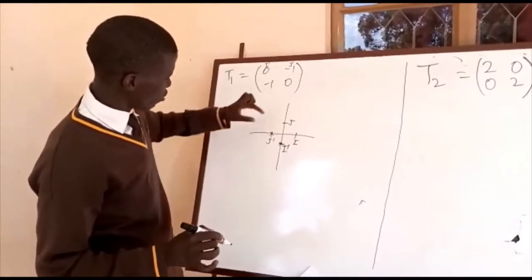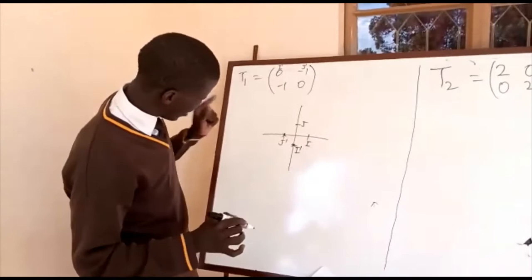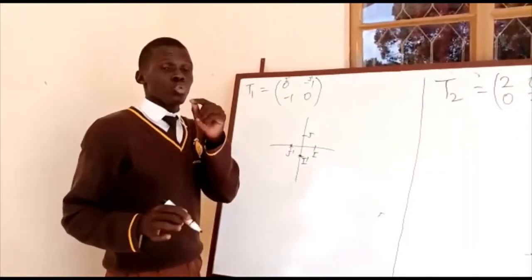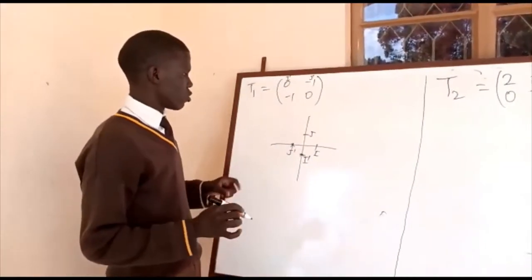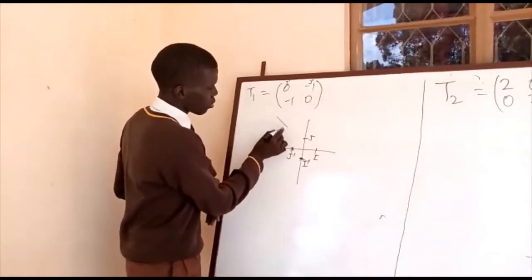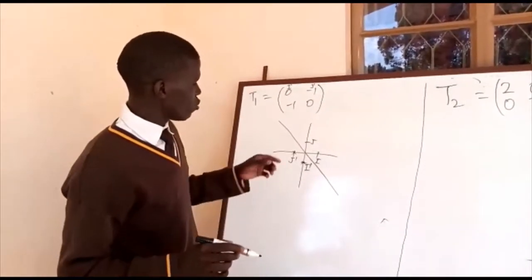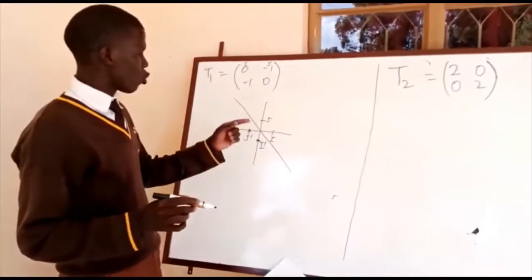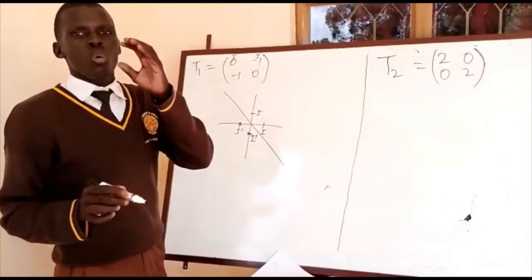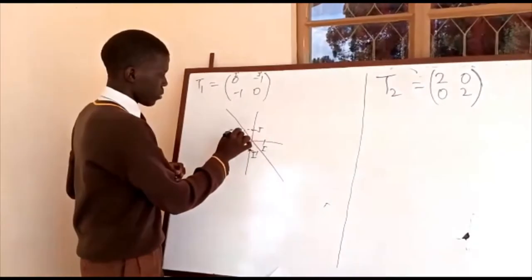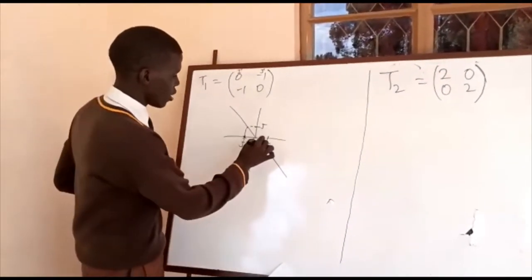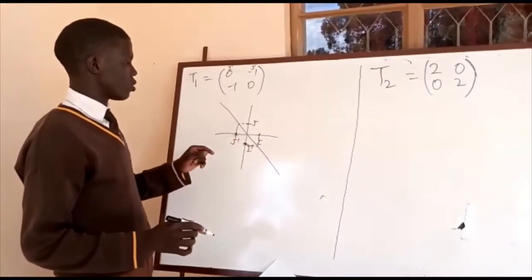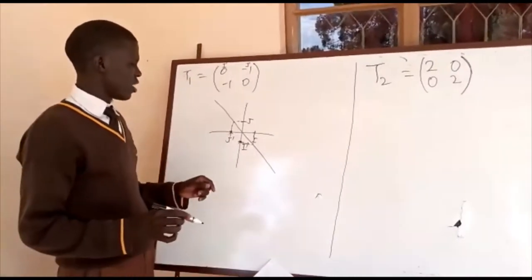If you look at this image and consider the distances, you can see that if we project a line in the middle, we can clearly see a reflection. In a reflection, the image distance equals the object distance. Completing the perfect square confirms this is indeed a reflection.